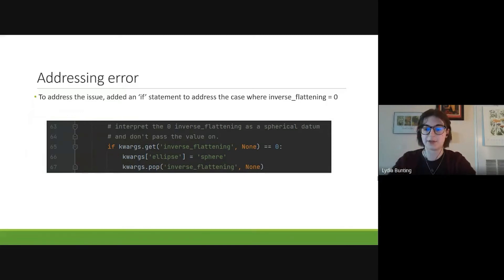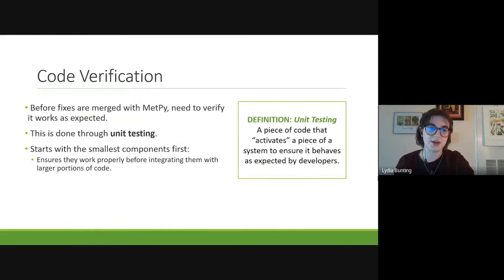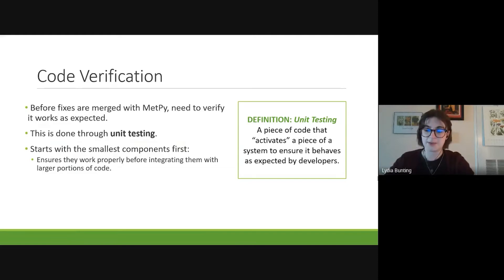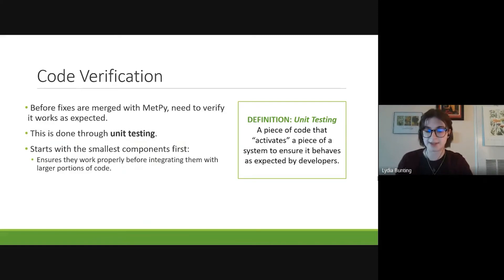After this code was changed, before it could be implemented into the rest of the project, it had to go through code verification — basically to ensure that the code is working as expected. This was done on my part through unit testing, which is a piece of test code that activates a piece of the system to ensure it behaves as directed by developers. It's called unit testing because it starts with the smallest components of the code first, then works line by line, increasing in size until all of the code has been tested to ensure it's all integrating correctly and working as expected.